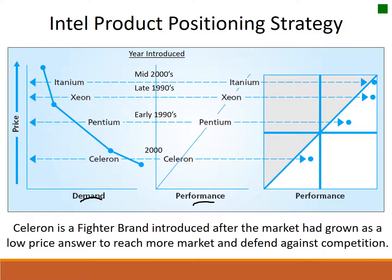After which, they came back and offered the Celeron product. So they went from the Pentium, then bumped the market up to the Xeon, then came back down and offered the Celeron, which is at a lower price point and higher demand, but also at a lower performance level. Then, finally, in the mid-2000s they offered the Itanium, which was a better-performing product at a much higher price.